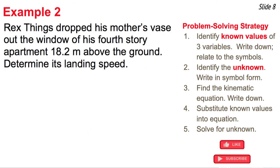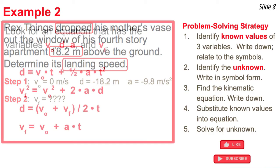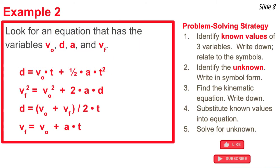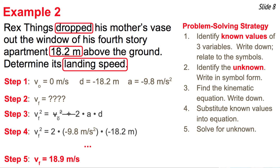Example two is the same scenario — Rex drops the vase 18.2 meters — but now we want to find the landing speed, the final velocity. Known values: displacement is negative 18.2 meters, v-original is 0, and acceleration is negative 9.8 meters per second squared. The unknown is v-final. Using the second kinematic equation, v-final squared equals v-original squared plus 2ad — the v-original squared term cancels, giving v-final squared equals 2 times a times d. Substituting known values yields a final velocity of 18.9 meters per second.